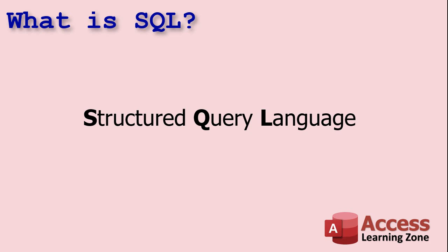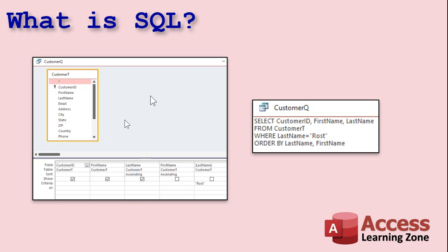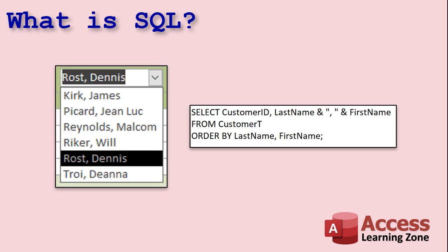So what is SQL? SQL stands for Structured Query Language — it's basically the programming language that Access queries are based on. You're familiar with the query by design view where you build a query graphically, you put tables in and add fields, sort ascending or descending, add criteria. Behind every one of those queries is SQL. In addition to queries, SQL is also behind forms, reports, combo boxes, list boxes — any object that has to get data from a table generally has some SQL involved.